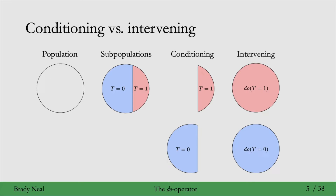In contrast, if we are intervening, then we're not restricting the data to a specific subset of the data. Rather, for do t equals 1, when we're intervening to set t equal to 1, what we're doing is we're doing that for the whole population. So, we're saying, what would it be like for everyone in this population to receive treatment 1? And similarly, for do t equals 0, we're looking at what it would be like if everyone in the population received treatment equals 0.